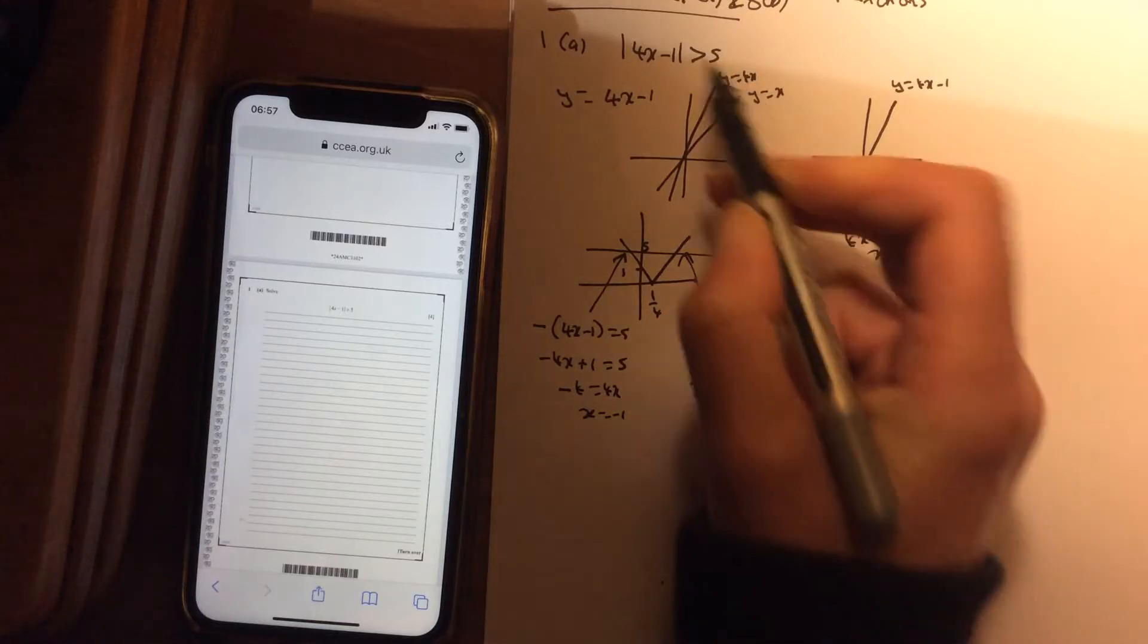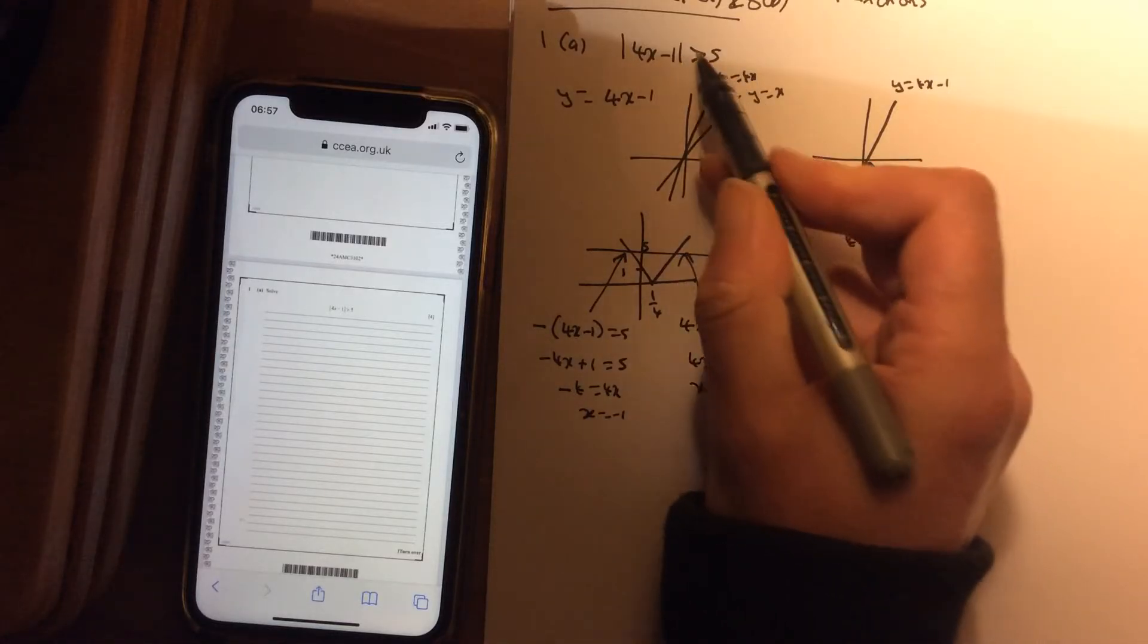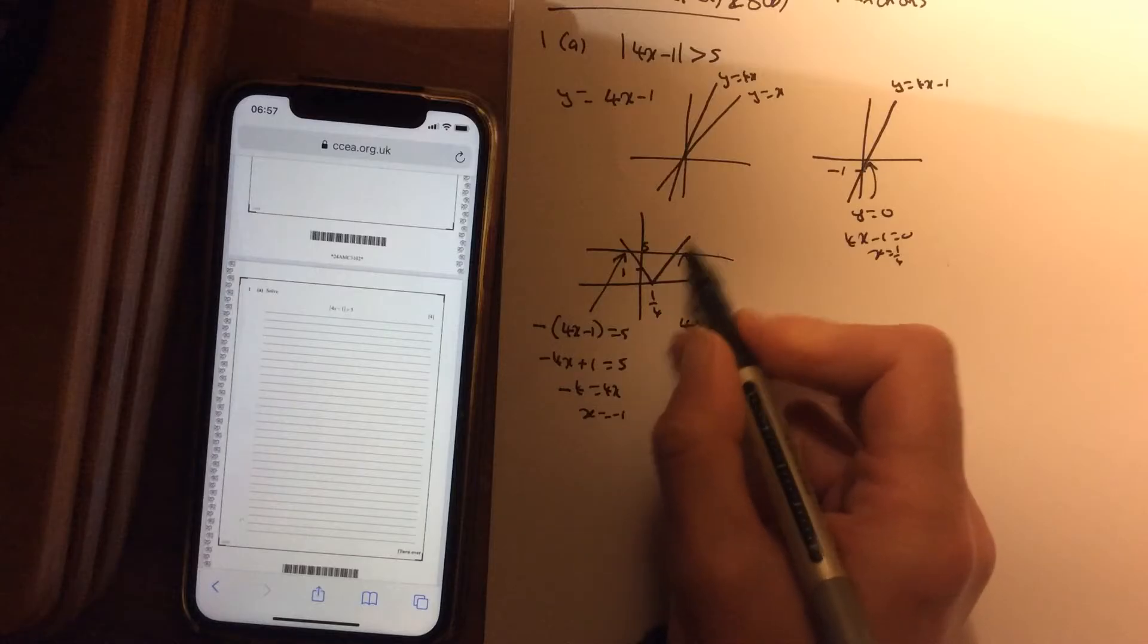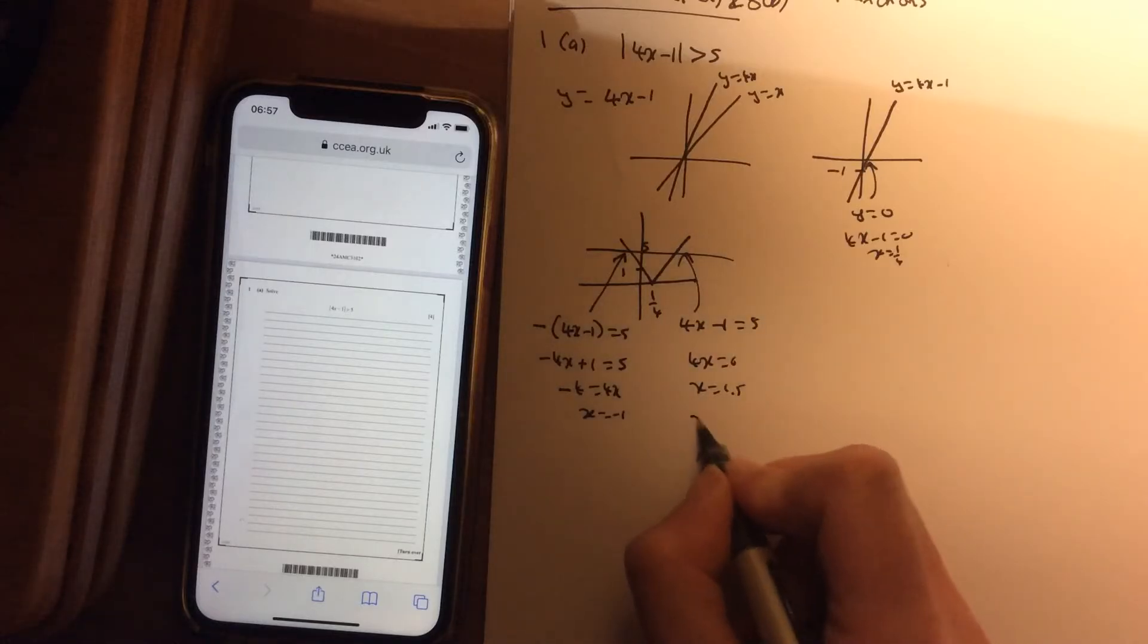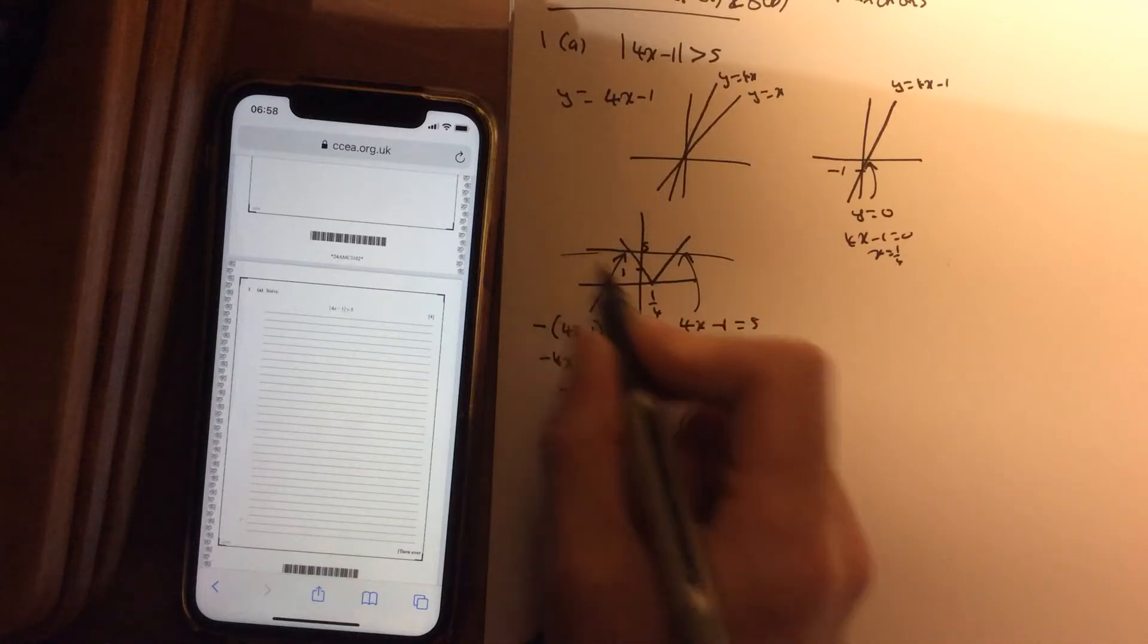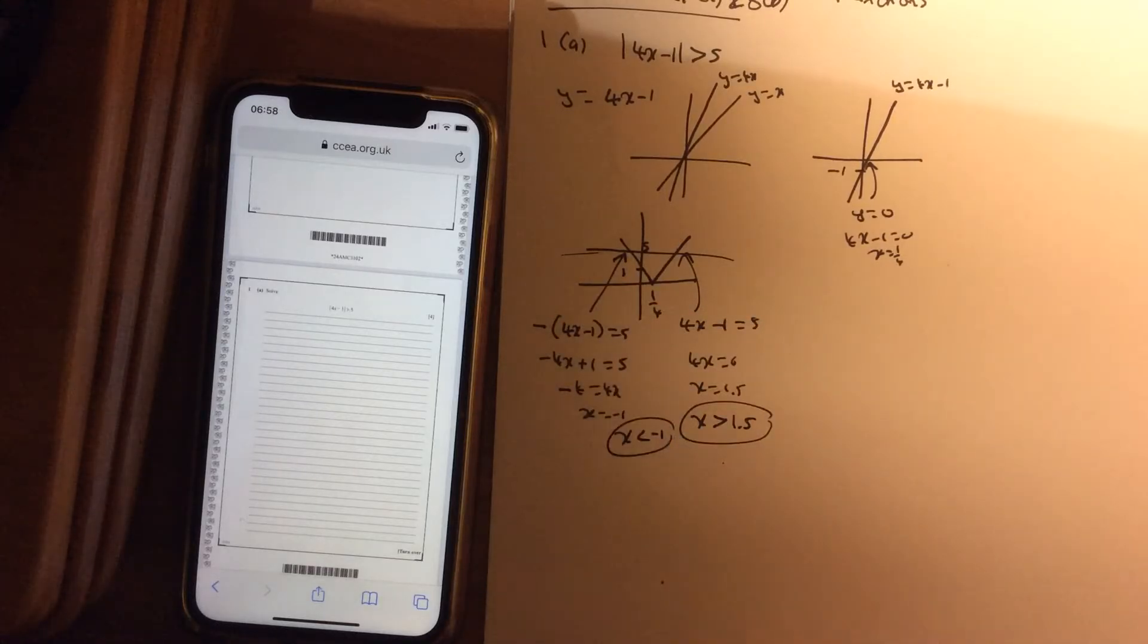So x is minus 1.5. Now the question is when is the modulus graph above 5. So the modulus graph is above 5 on this side. So x is greater than 1.5. And to the left here. So x is less than -1.5.